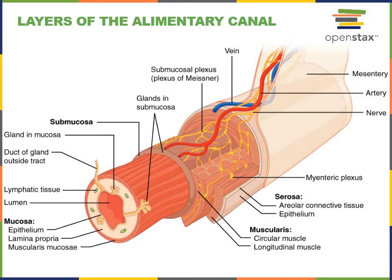There is nervous tissue within the alimentary canal known as the enteric nervous system. The enteric nervous system consists of the myenteric plexus, a network of nervous tissue found in the muscularis, and the submucosal plexus, a network of nervous tissue found in the submucosal layer. The enteric nervous system includes sensory receptors such as chemoreceptors that can detect the presence of nutrients and mechanoreceptors that can detect stretching of the alimentary canal. This sensory information can be processed by local integration centers to enable local reflexes that function as intrinsic control mechanisms.